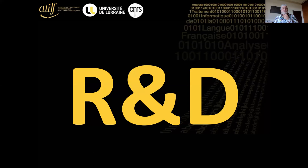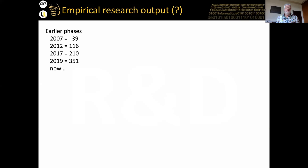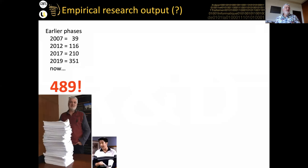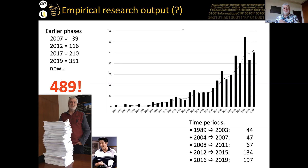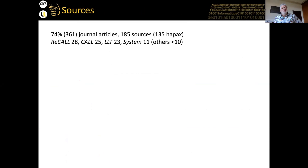Results: I've been tracking this ongoing collection. In 2007 I had identified 39 empirical DDL studies; in 2012, 116; then 210, 351, and now 489 — quite a lot to read, and we did read them with Nina. Publication numbers are increasing nicely over time, showing the field is in a healthy situation. A three-year smoothing allowed us to identify time periods: the first is 14 years long, and the others are equal four-year periods, though with an unequal number of studies.